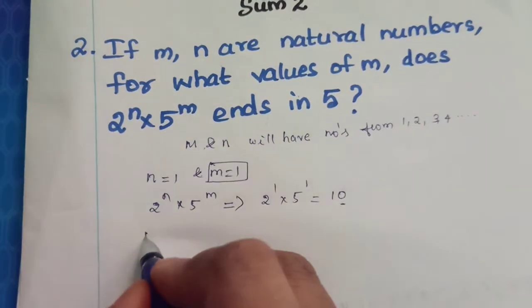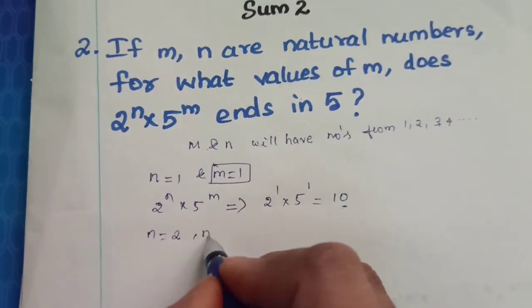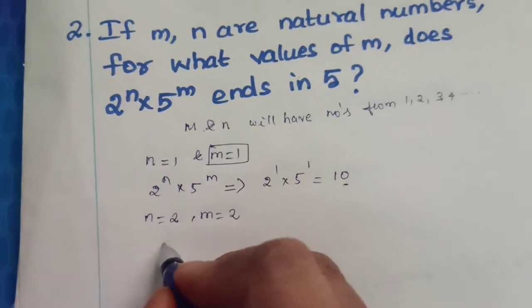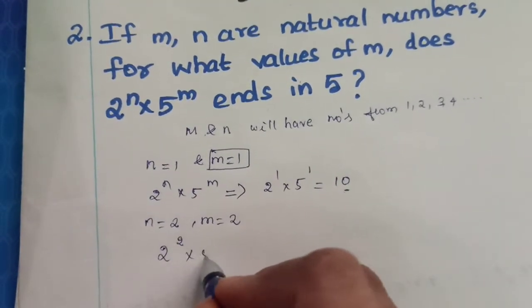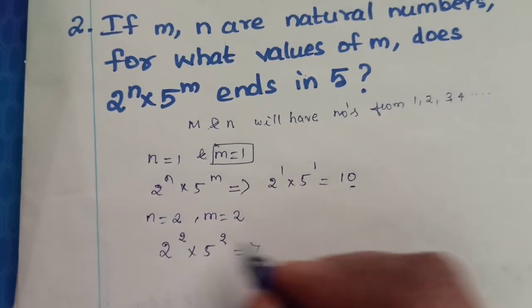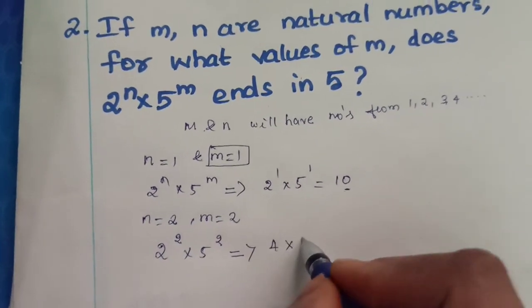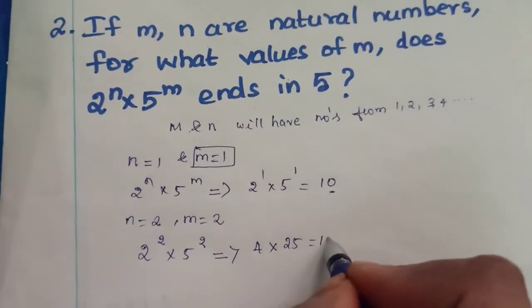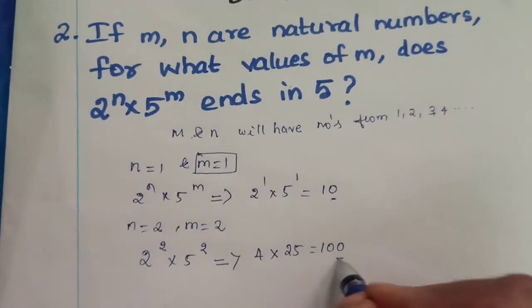Next, we are going to put n is equal to 2 in order we are coming. m is equal to 2. So what will happen? 2 power 2 into 5 power 2. So what will be the answer? 2 power 2, 2 square is 4. 4 into 25 is 100. Here also it is ending with digit 0.